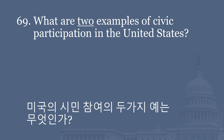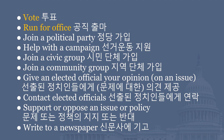What are two examples of civic participation in the United States? Vote. Run for office. Join a political party. Help with a campaign. Join a civic group. Join a community group. Give an elected official your opinion on an issue. Contact elected officials. Support or oppose an issue or policy. Write to a newspaper.